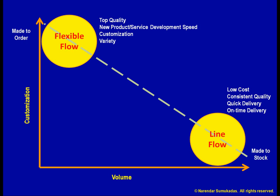Finally, how about volume flexibility? Let's just go down the volume axis — right? Actually, that is incorrect. High volume is often the opposite of volume flexibility. Let us say XYZ company mass produces sandwiches using a line flow. This process is well suited to be machine-driven, automated, and capital intensive. So XYZ company invests a considerable sum of money into the equipment and facility.